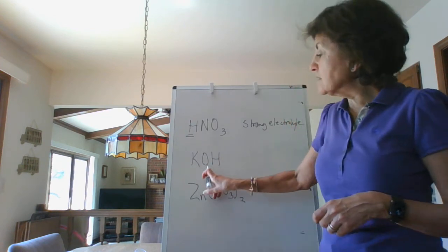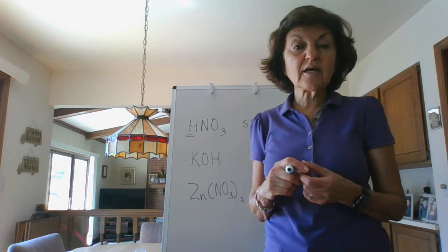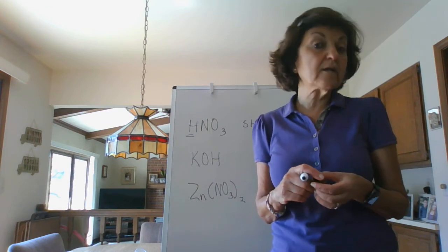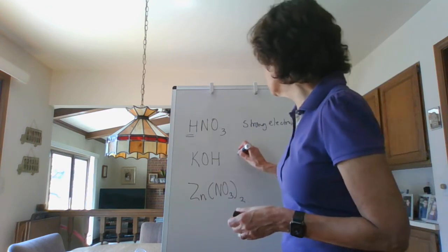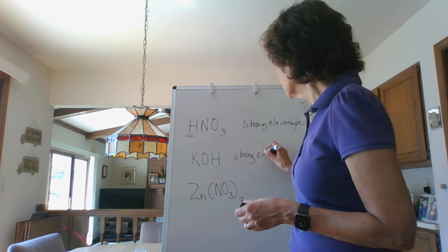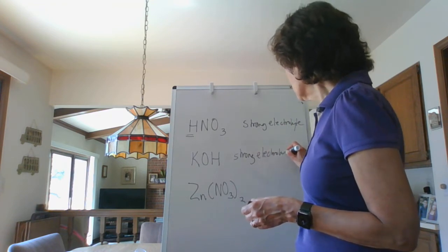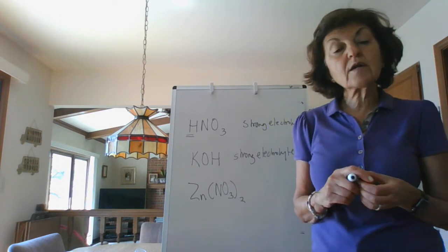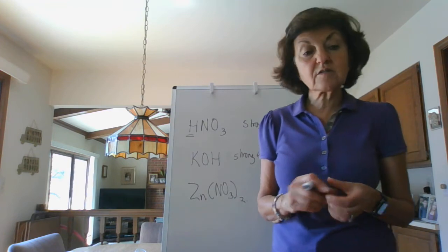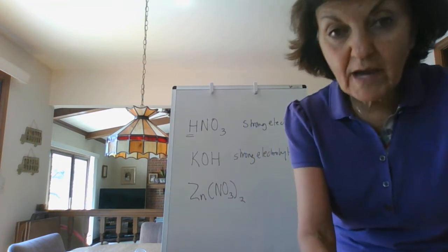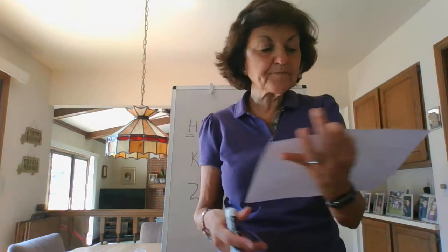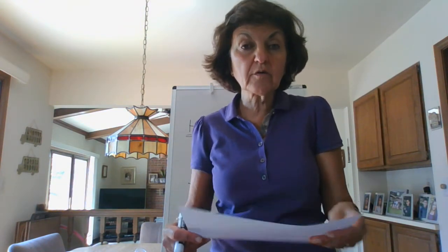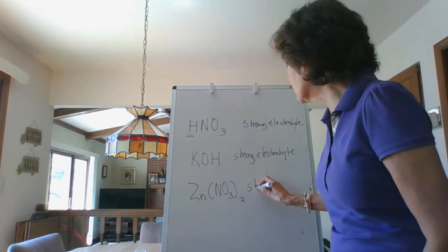Is potassium hydroxide one of the strong soluble bases just mentioned? Is it a Group 1A metal hydroxide? Yes, it is — so this is a strong electrolyte. What about zinc nitrate? Is this one of the soluble ionic salts we talked about? If you don't have it memorized yet, look at your table. It says nitrates are all soluble. So yes — strong electrolyte.